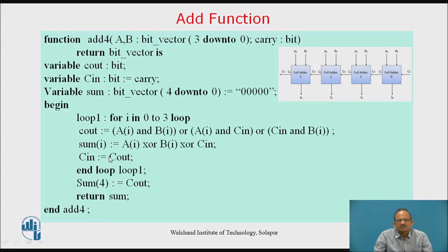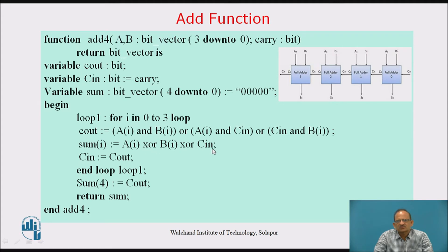Now let us consider the implementation of the function. There is a loop labeled 'loop1': for i in 0 to 3 loop. This is basically the expression for the carry and sum of each full adder. The loop executes for values of i from 0 to 3. With i equal to 0, it implements the first full adder: cout equals (A(i) and B(i)) or (A(i) and cin) or (cin and B(i)), and sum(0) equals A(0) xor B(0) xor cin.